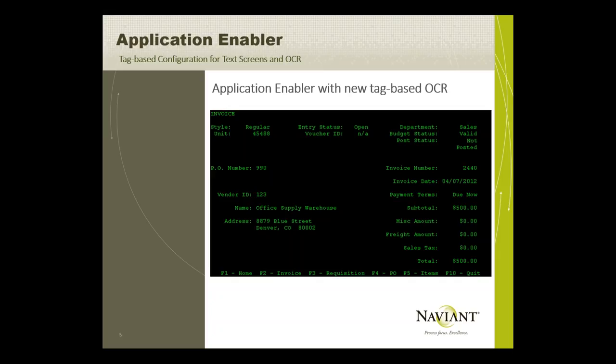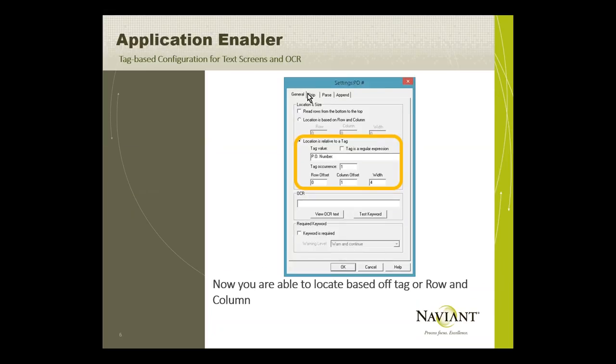Through normal text-based OCR configuration in App Enabler, you have to specify a line and column index — you basically zero in on the start of your data, and if it moves up a line, it's totally gone. You have to make a completely different enabler configuration. The new enhancement allows Application Enabler to find the values you need by searching for a tag or text value, and it will assist in finding the data. The tag is the PO number, and the value will always be to the right of the text even if information on the screen moves around.